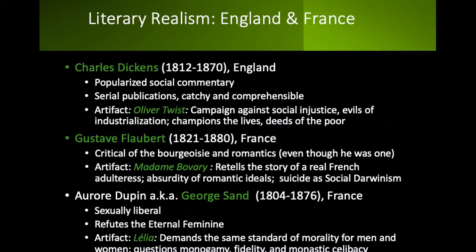Dickens' exposure to good people in dire circumstances came out in his novels, and he pointed out societal villains too. In fact, Dickens popularized social commentary — he made it en vogue to be frank about social ills, and his serial publications were catchy and comprehensible. In them, he criticizes industrialism, depicting it as a cold machinery that replaced humanity and cared nothing for the real people that got lost in the shuffle. In his novels, the details pile up so that scenes don't just become real — they become overwhelming, like the lives of the people he writes about.